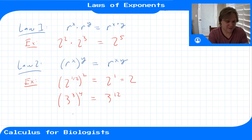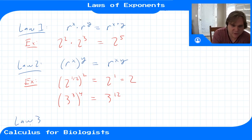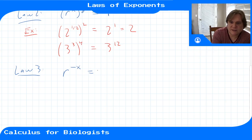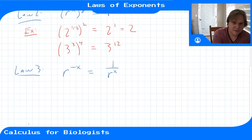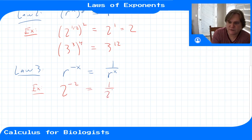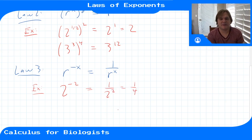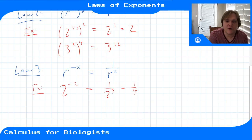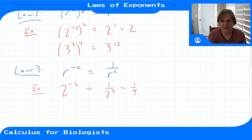The third law is how to interpret a negative exponent. If I have r^(−x), this is the same thing as 1 over r^x. The negative power means put it in the denominator. An example: 2^(−2) is the same thing as 1 over 2², which is 1/4. It doesn't really make sense to say 'multiply 2 by itself negative two times,' so we write it as 1 over 2², which is 1 over 2 multiplied by itself two times. The negative sign means put it in the denominator.